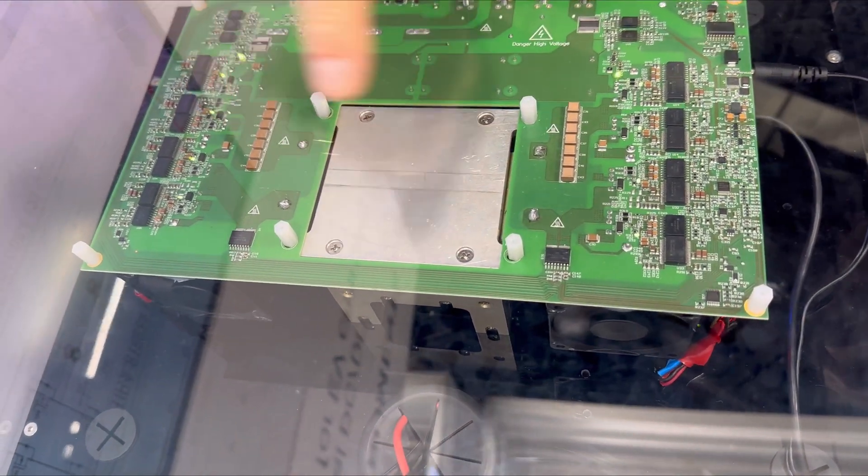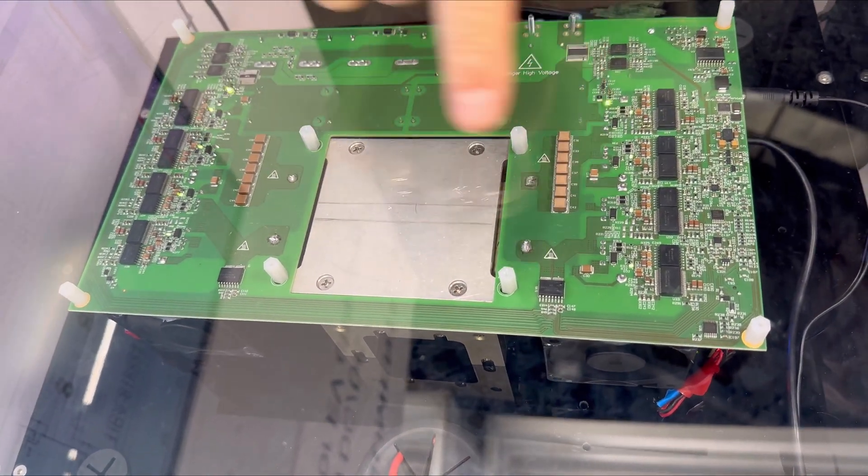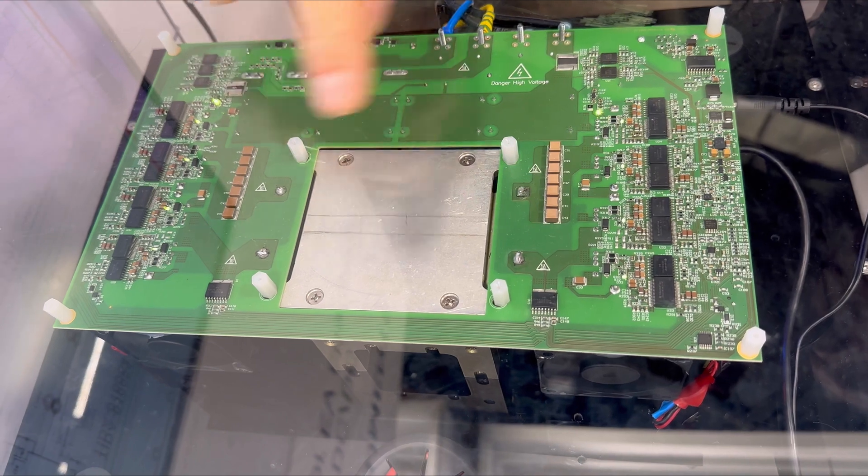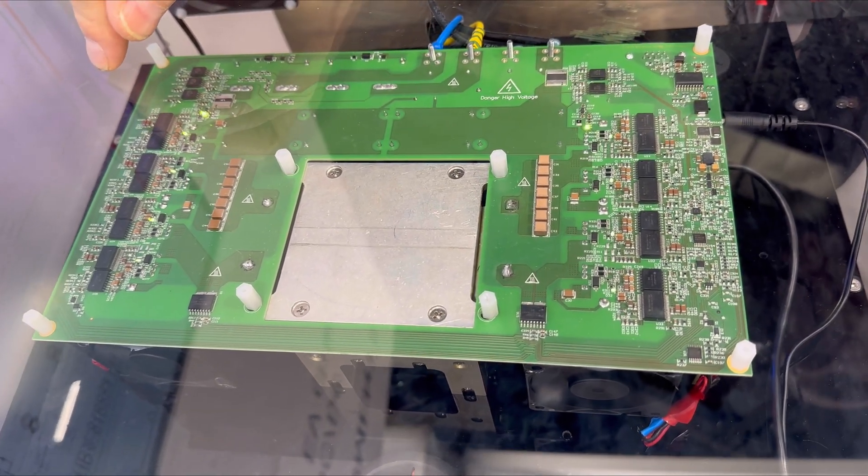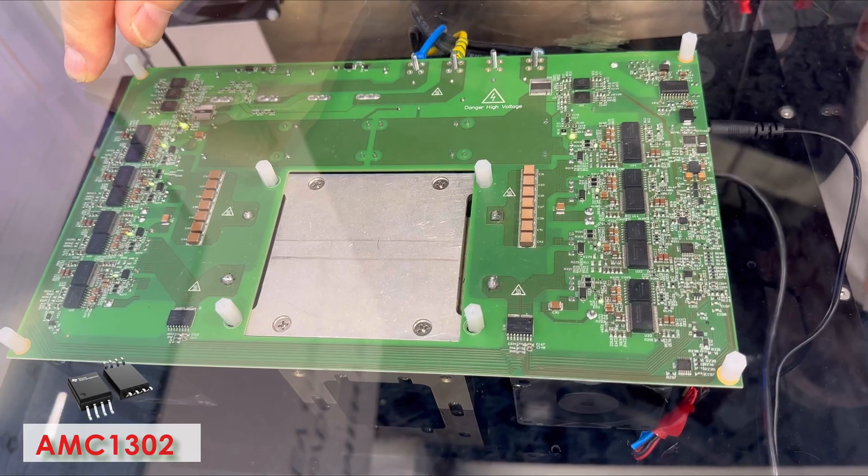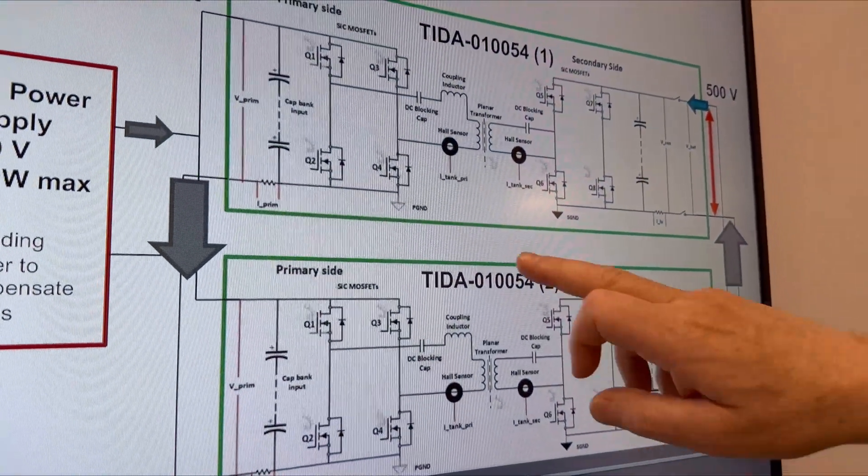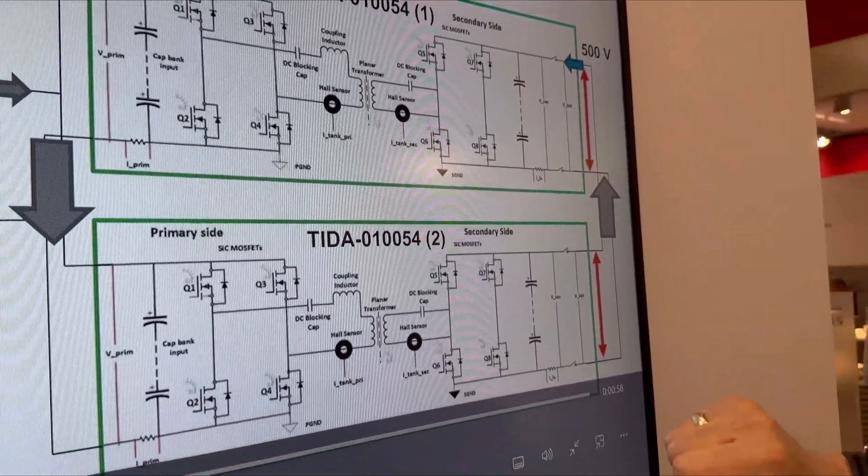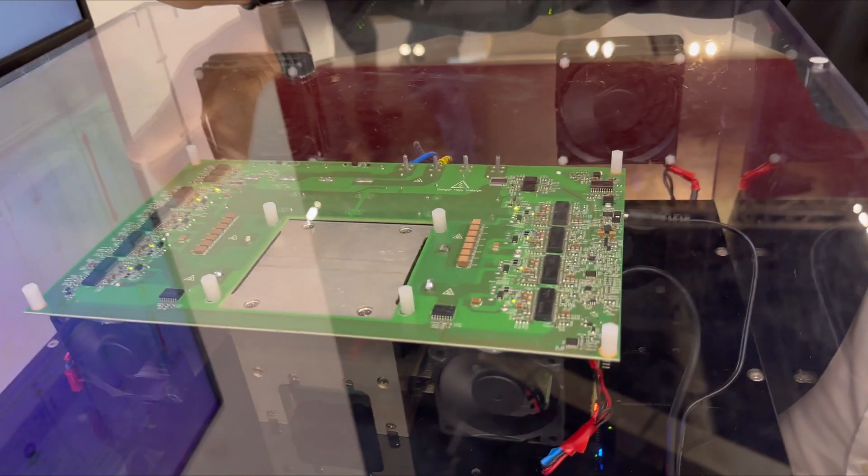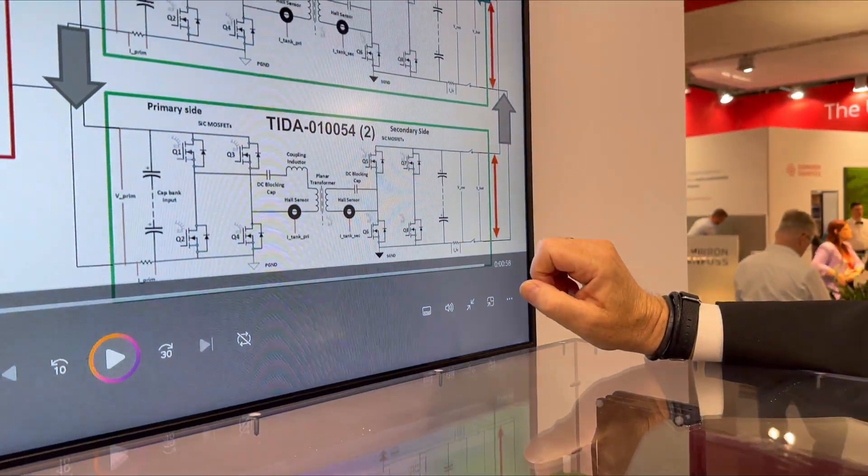And we have also current measurement, which is in-package Hall sensor, which are sitting left and right to measure the transformer current. But we have also shunt-based current sensors AMC1302 and AMC1306 to measure basically the currents that are flowing on the input and the output side. And this is used to regulate basically input power and output power.